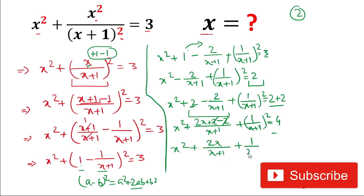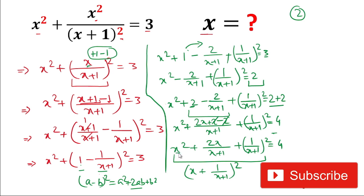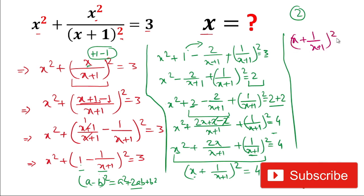Now if you look at here, it is in the form of (a+b)² — specifically (x + 1/(x+1))² = 4 = 2². So the value of x + 1/(x+1) = ±2. Taking the positive case first: x + 1/(x+1) = 2.